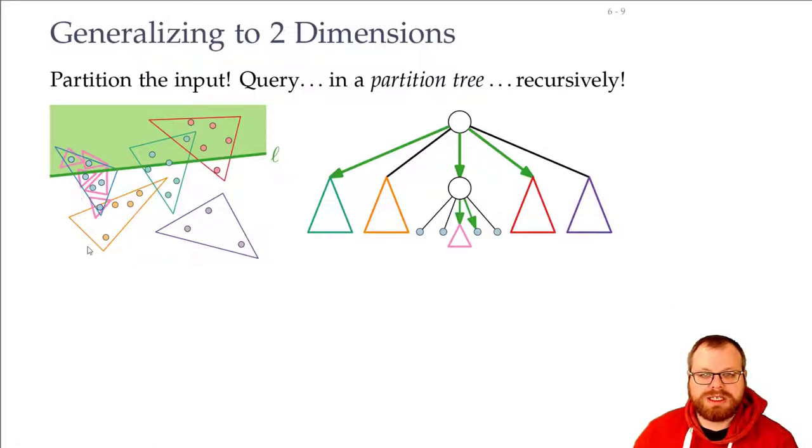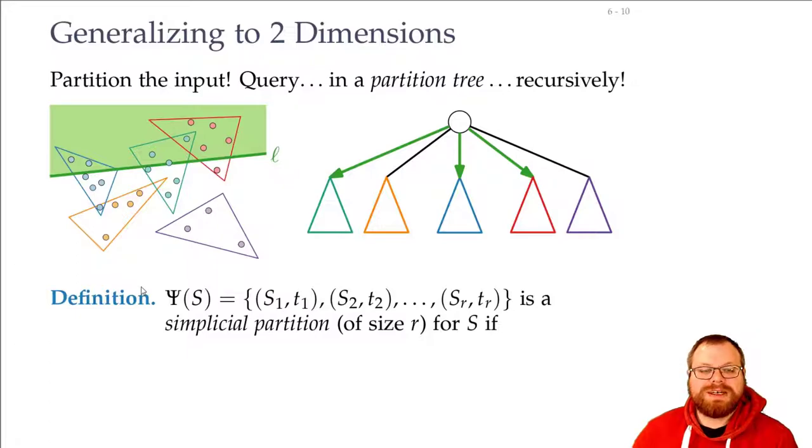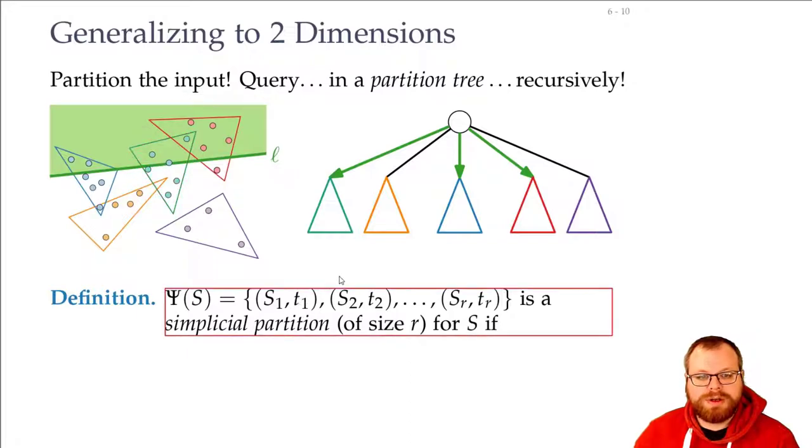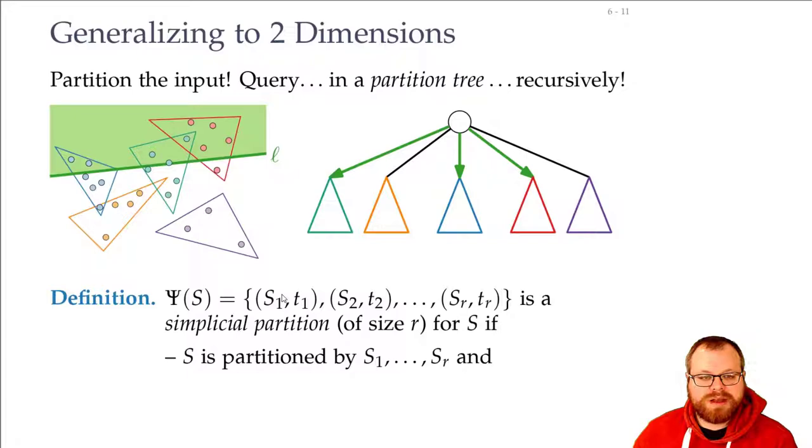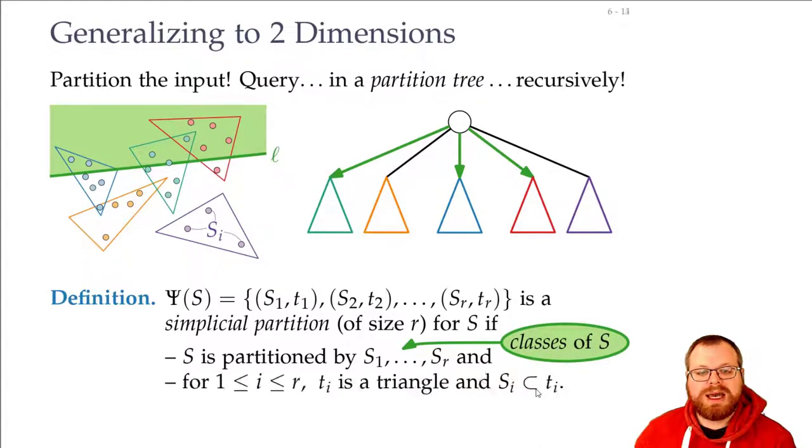But before we look into the querying algorithm in detail, we first want to do some definitions. So we call this a simplicial partition of our point set S, and it's a simplicial partition of size r. We have a partition of all these points into point sets and triangles. The first one, the cyan one, these points are S1, and the triangle is T1. Then we take the second point set orange—these four orange points and the orange triangle, and so on. This is what we call a simplicial partition if the following holds. The point set is partitioned by this, so every point is in exactly one of these sets. We also call these sets the classes of S. And for every i between 1 and r, this is a triangle, and the point set lies inside the triangle.